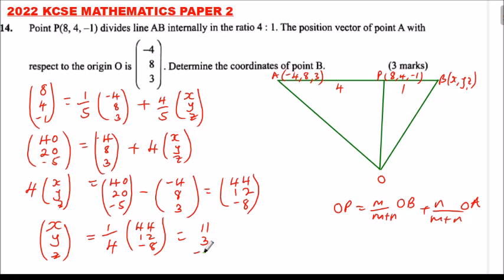So, it means (X, Y, Z) is equals (11, 3, -2). But, remember X, Y, Z are the coordinates of, this is now the position vector of OB, meaning the coordinates of B are (11, 3, -2).